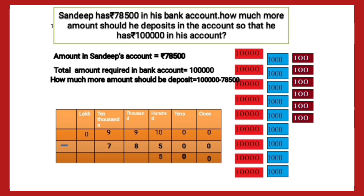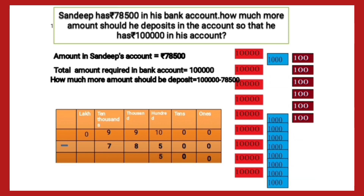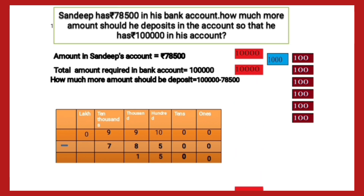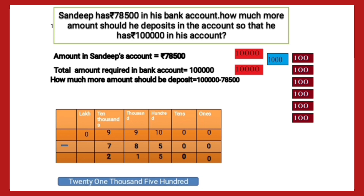We will have only 5 at hundreds. Then 8 from 9 at thousands gives us 1, and 7 from 9 at ten thousands gives us 2. So here is the answer: 21,500 — that is the amount required to make 1 lakh.